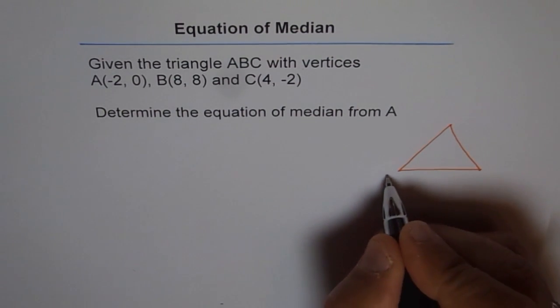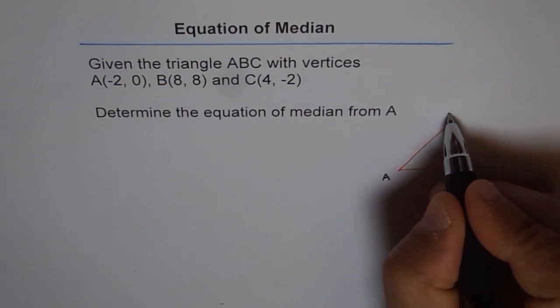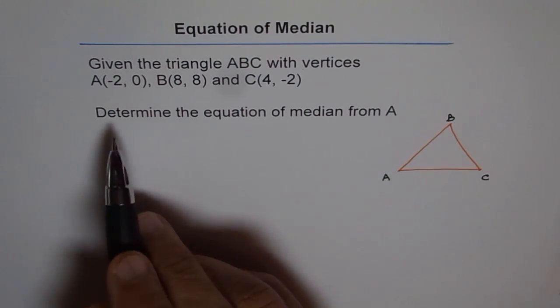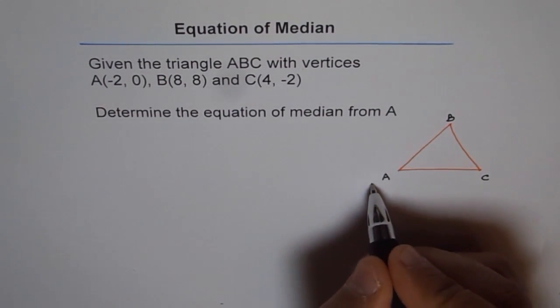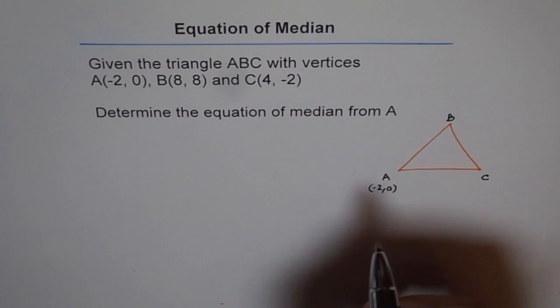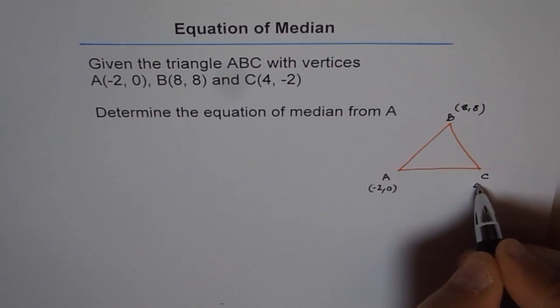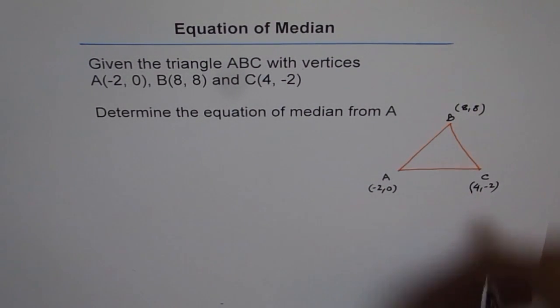So what we can do is just make a triangle ABC. Start with your standard triangle ABC. So you can write ABC in clockwise order and put the coordinates in. So A is (-2, 0). Let's put (-2, 0) here. B is (8, 8). So let's write (8, 8) here. And C is (4, -2). That's perfect.